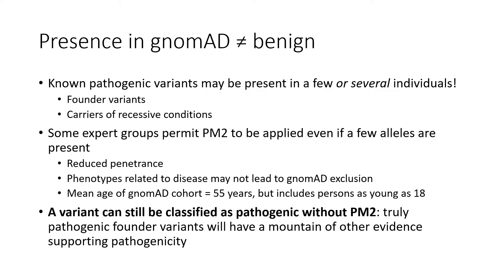This is a good example of why you can't draw a straight line between finding a variant in gnomAD and considering that variant to be benign. Think about Lynch syndrome. Although it's considered highly penetrant in the world of hereditary cancer, penetrance is not 100%, and age at first cancer diagnosis may not be until a person is in their 60s or later. The mean age of the gnomAD cohort is 55 years, but individuals as young as 18 may be included.